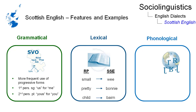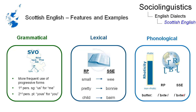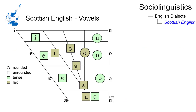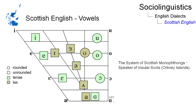Scottish English is highly rhotic — that is, the R is overtly realized in a post-vocalic environment. Further differences appear in the vowel system. Due to the fact that Scottish English is rhotic, it has fewer vowels than other varieties.